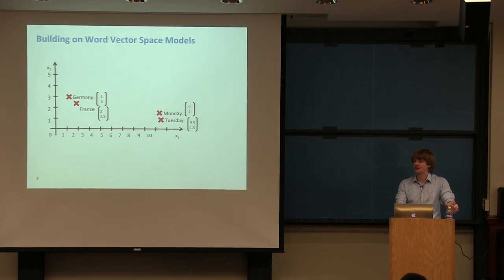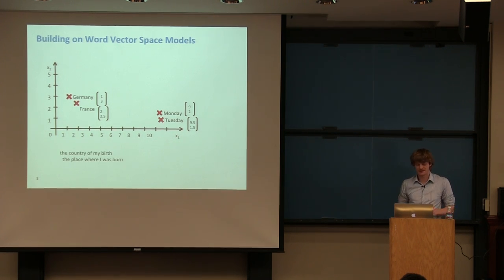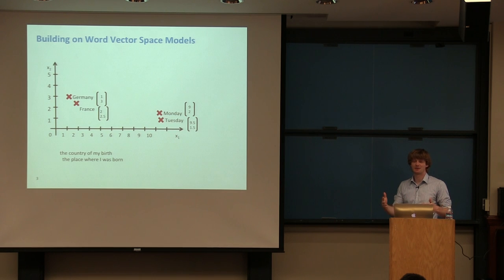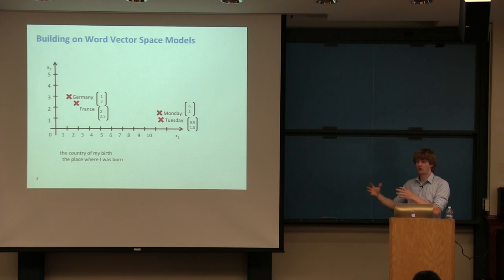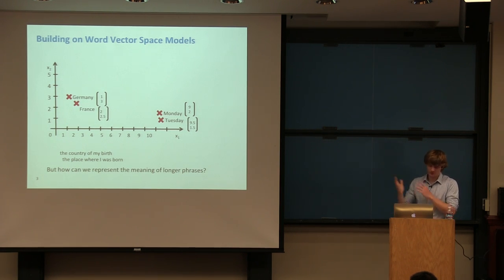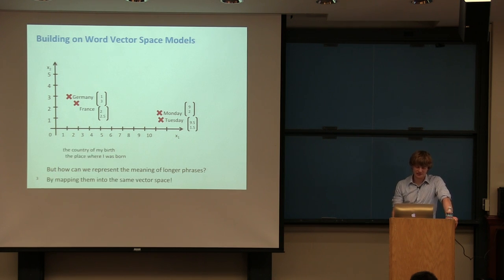Words never appear in isolation, and so far we haven't thought about vector representations for specific short sub-phrases. Consider the two phrases 'the country of my birth' and 'the place where I was born.' If building a text summarization system, we clearly wouldn't want both — despite 'country' and 'place' not being similar and 'birth' as a noun vs. 'where I was born' as a verb phrase. Ideally, a summarization system wouldn't include both of these phrases.